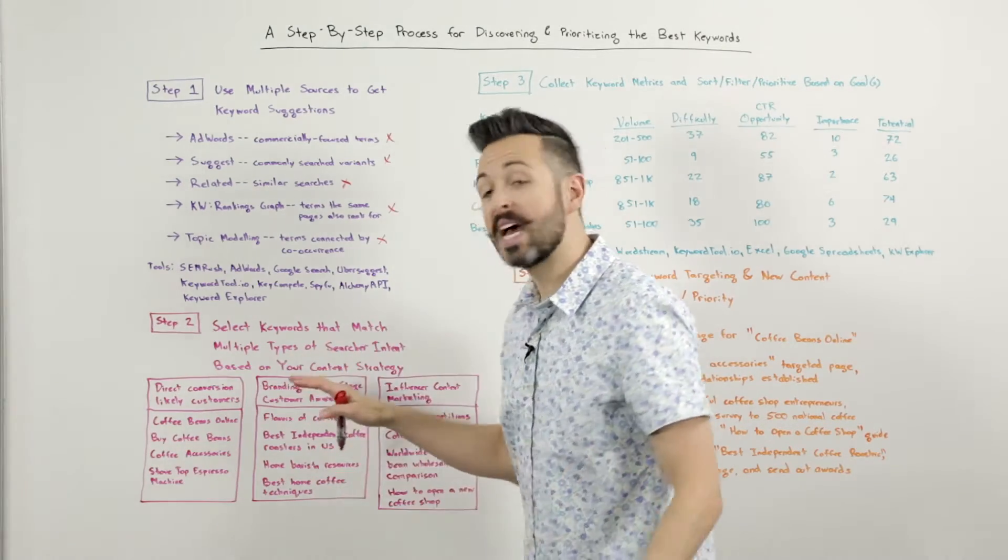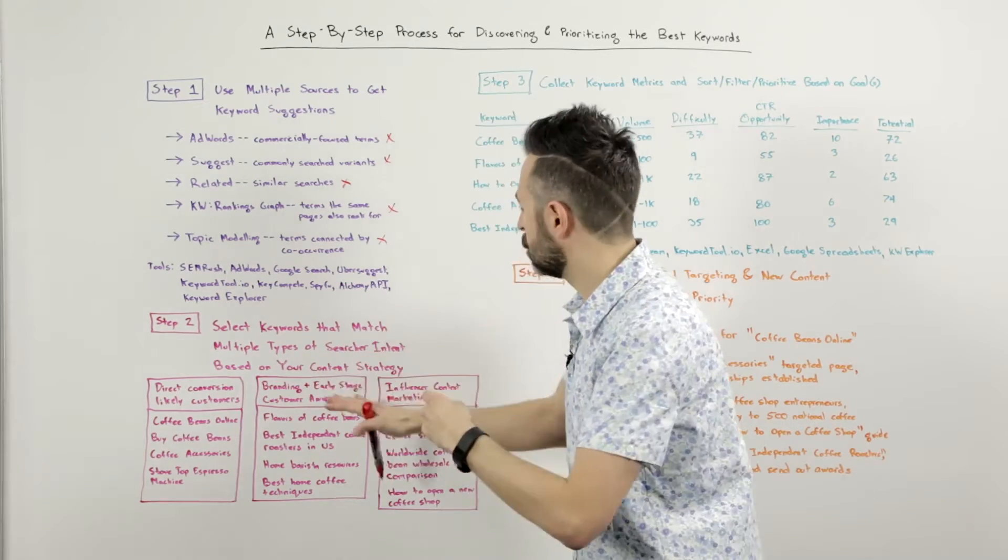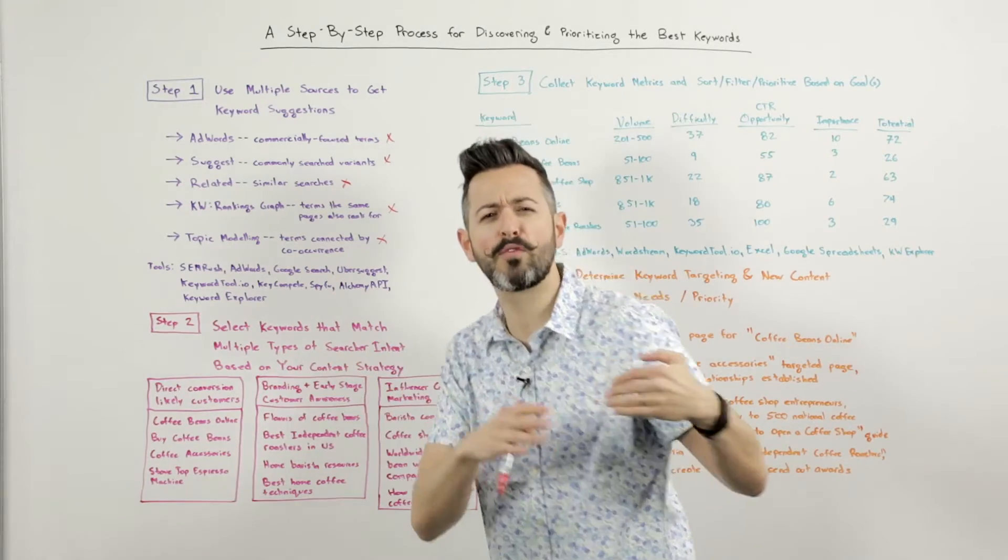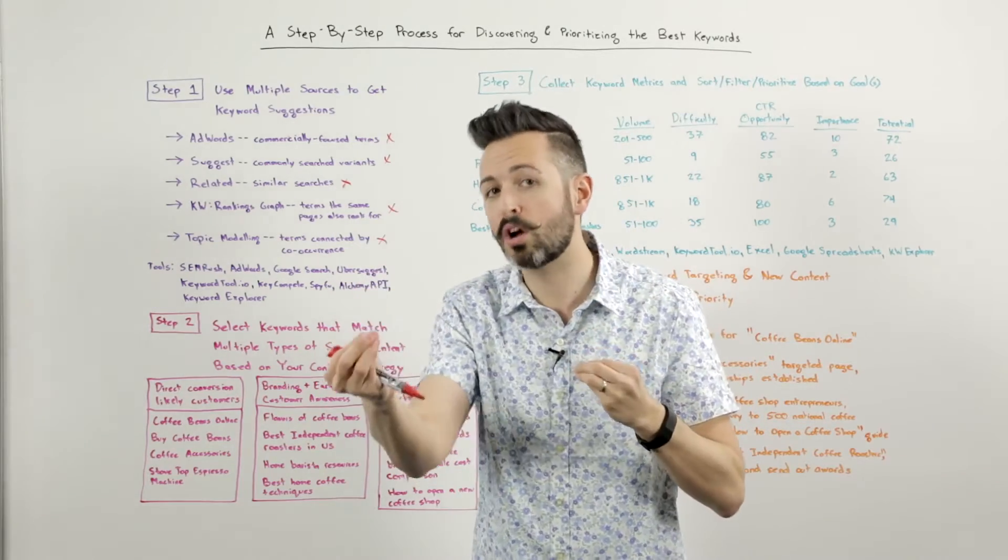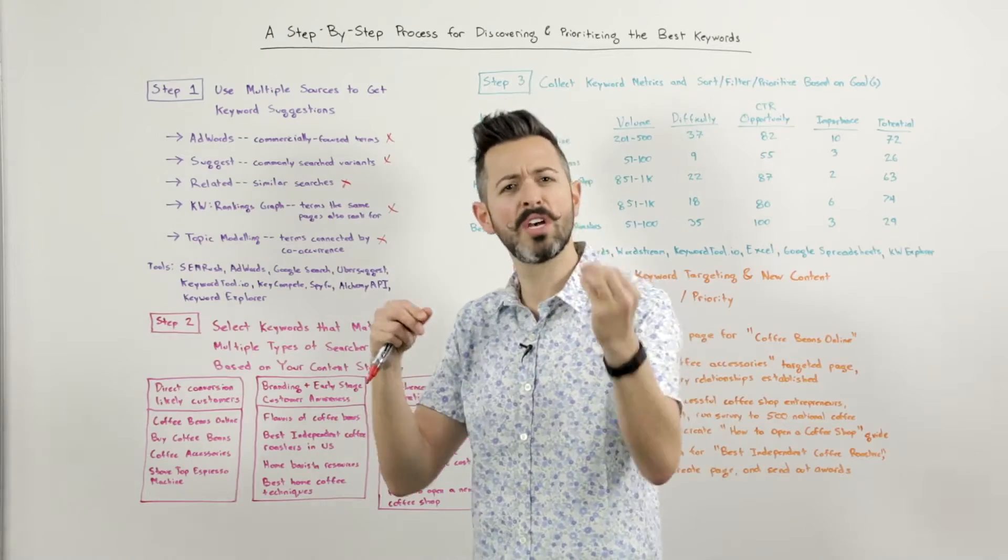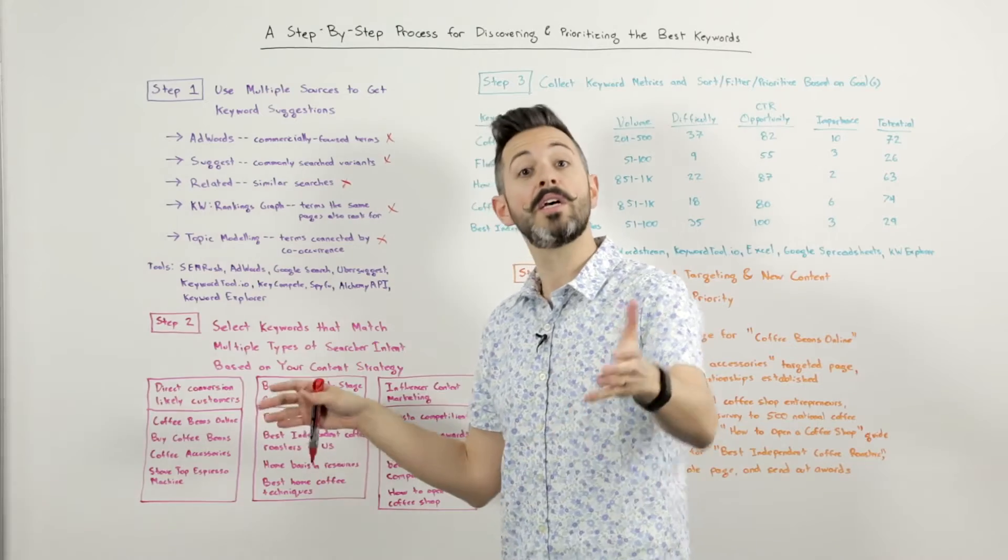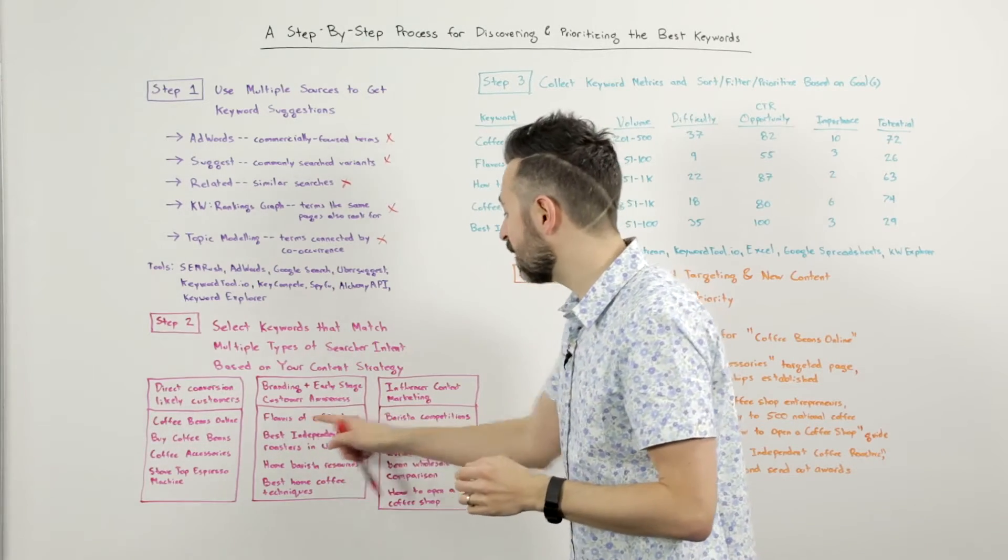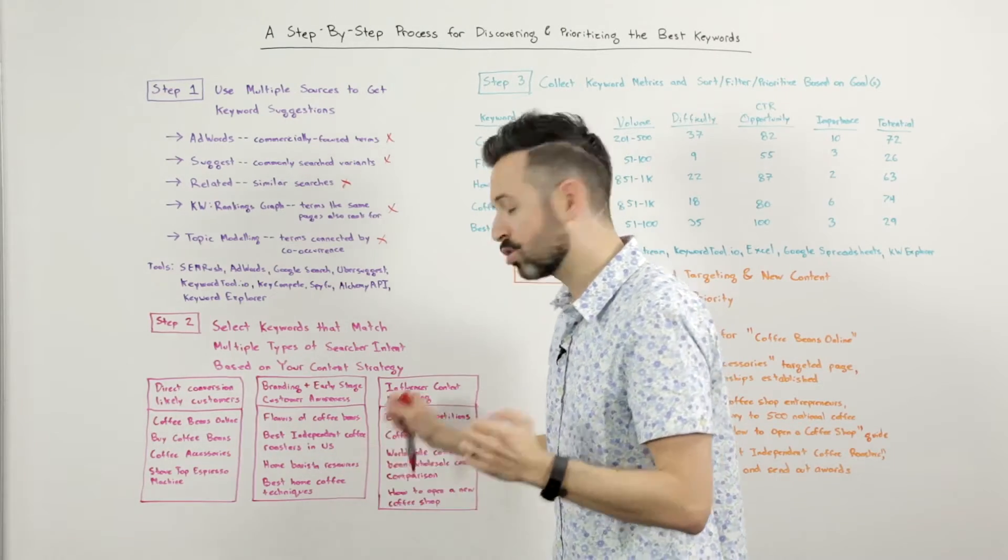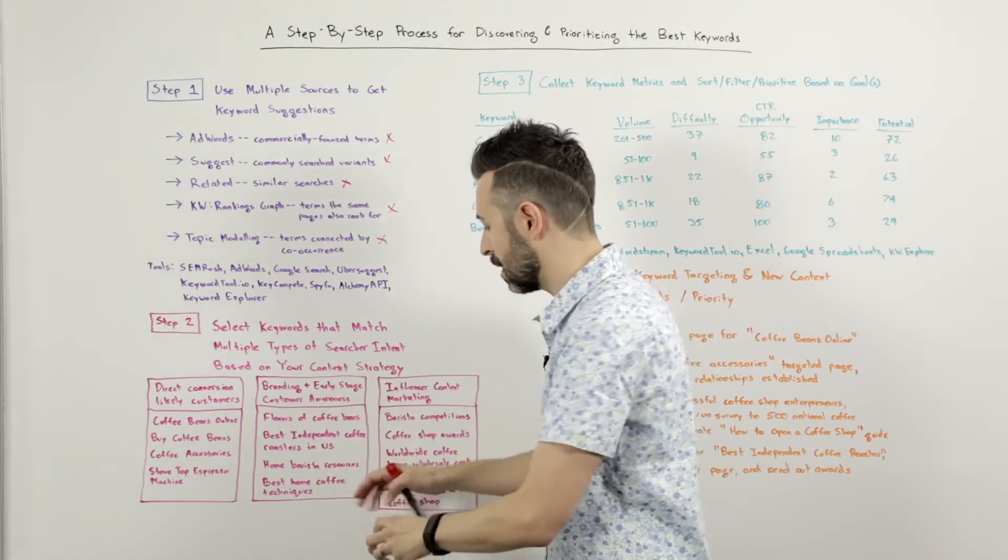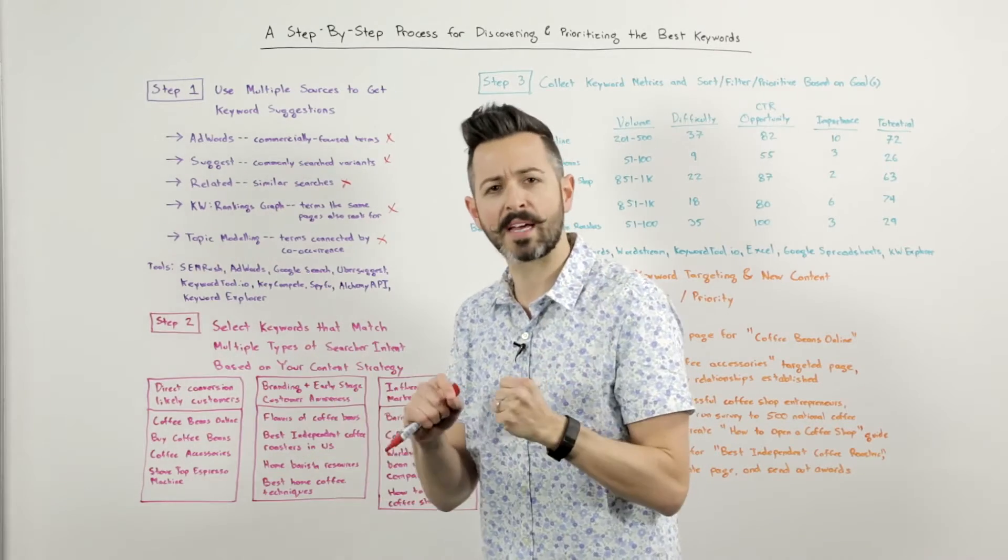Then I'm also looking at doing some strategic content to target folks early in the buying stage, like before they actually think, oh, I'm going to buy from them. I just want them to have an association with us. I want anyone who's interested in coffee, coffee aficionados, researchers, people who are passionate about the topic, to find me and have an association with my brand. In order to do that, I might target keywords like flavors of coffee beans, best independent coffee roasters in the US, home barista resources. People aren't going to convert on these keywords. Best home coffee techniques. I'm trying to get content, not necessarily buy directly.